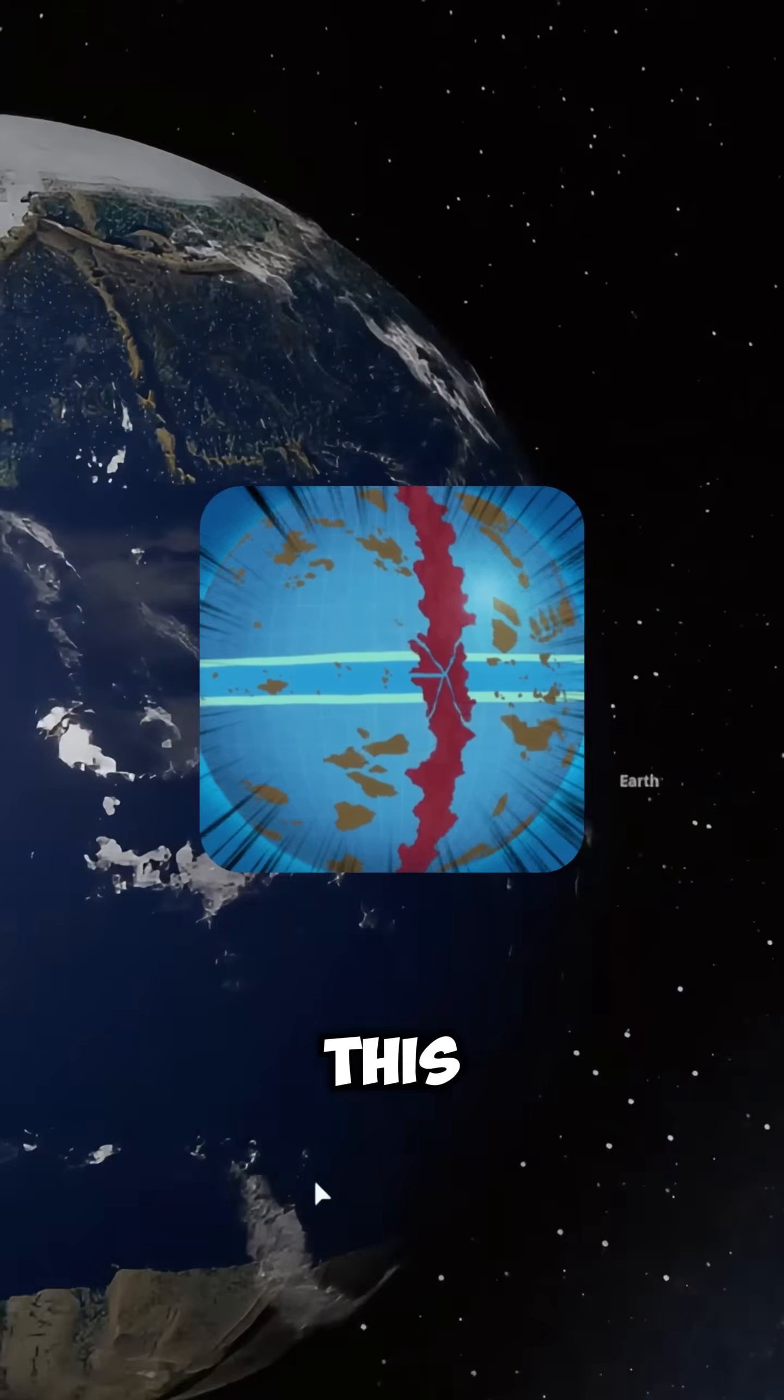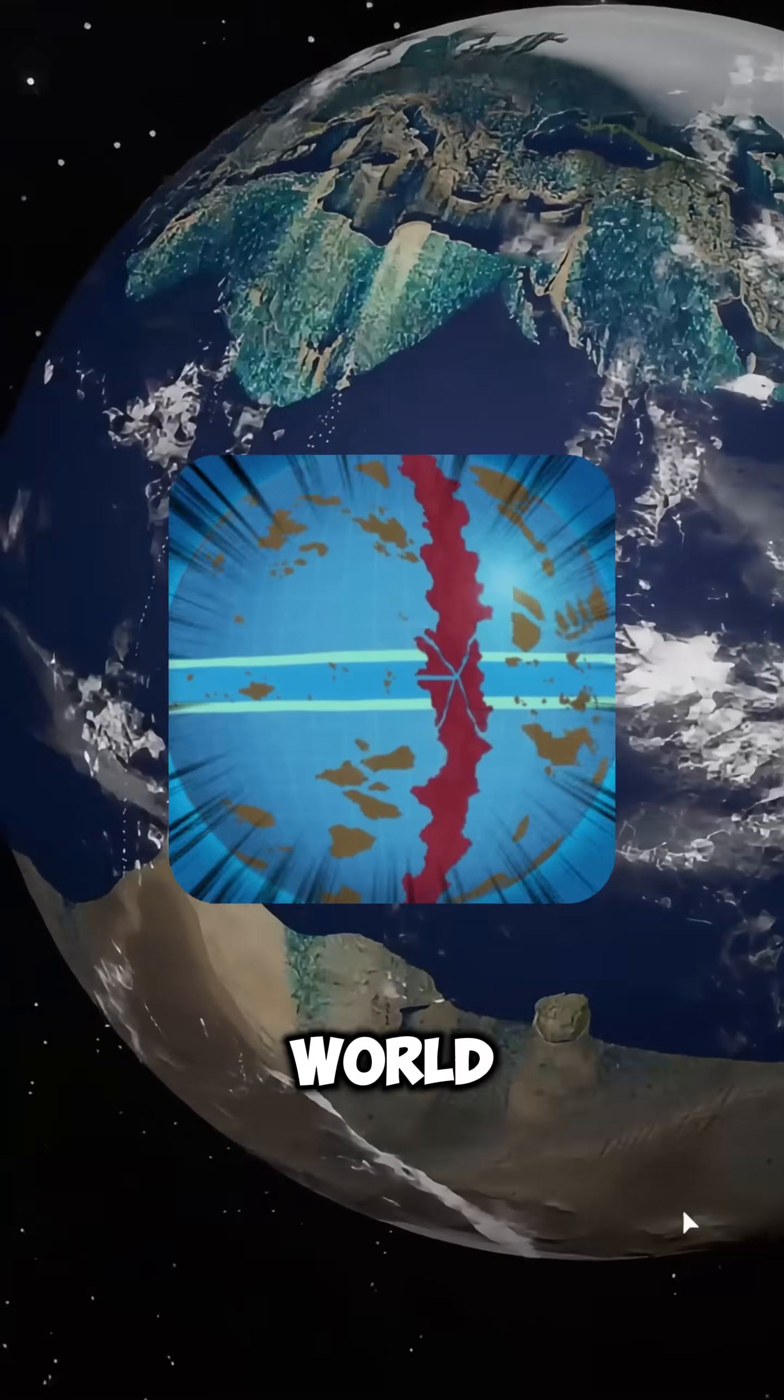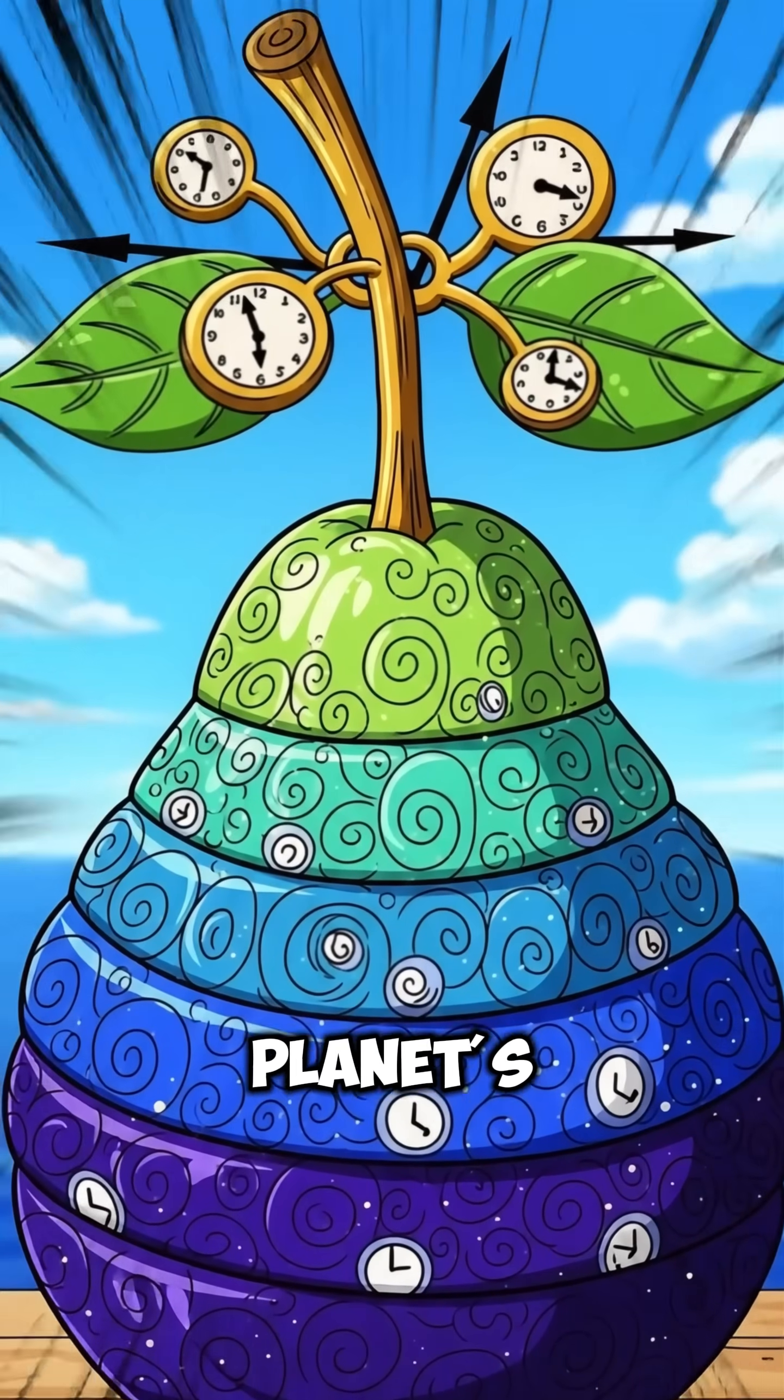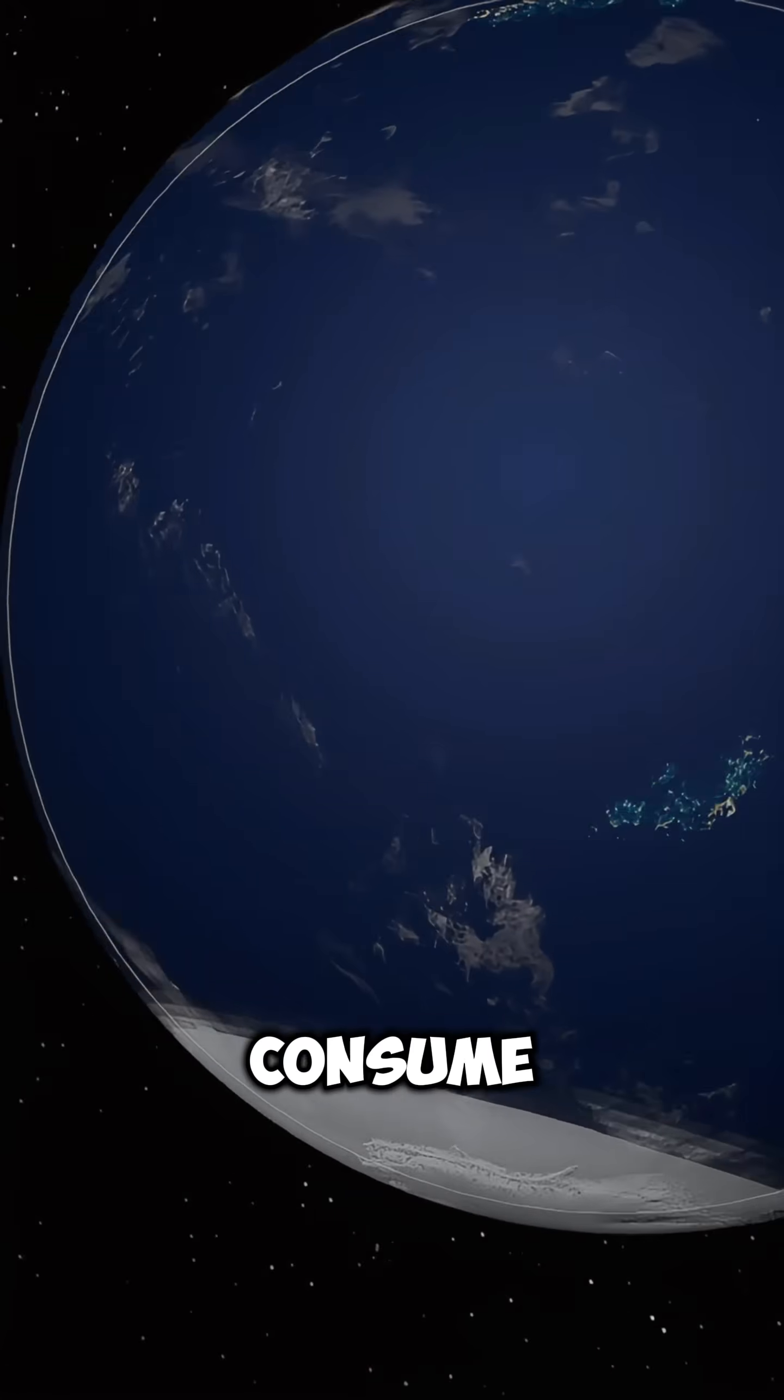Now, think about this. What if this is the real explanation for the end of the world in One Piece? If someone with a time fruit could change the length of the day, it would completely disrupt the planet's balance, causing the oceans to consume all the land.